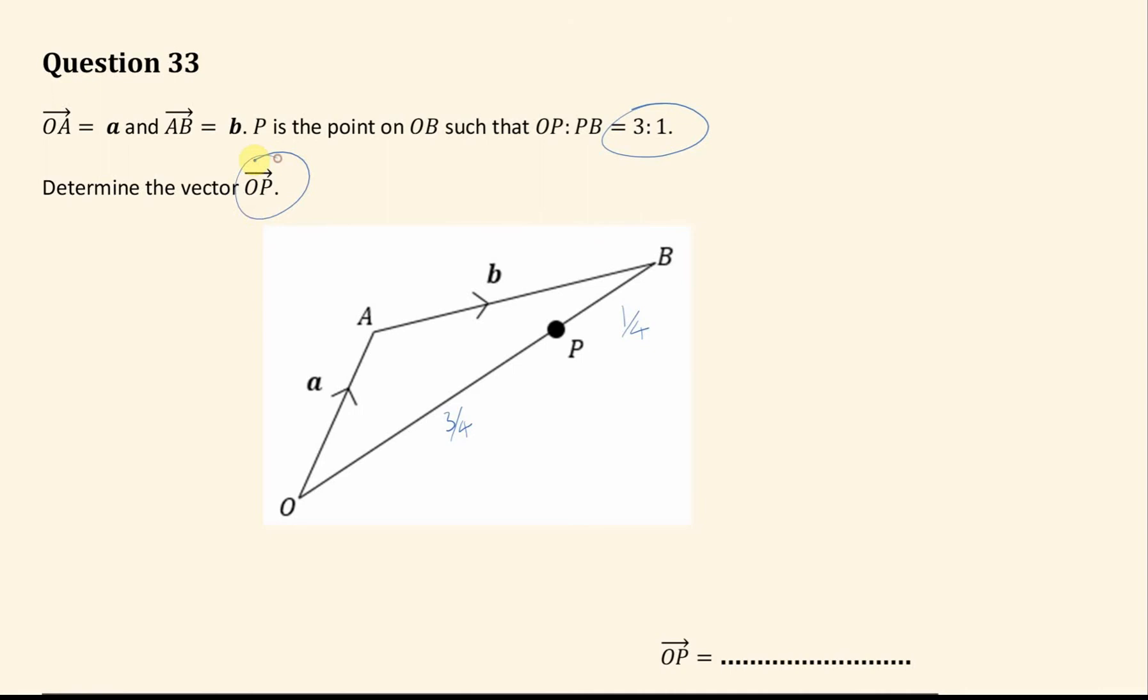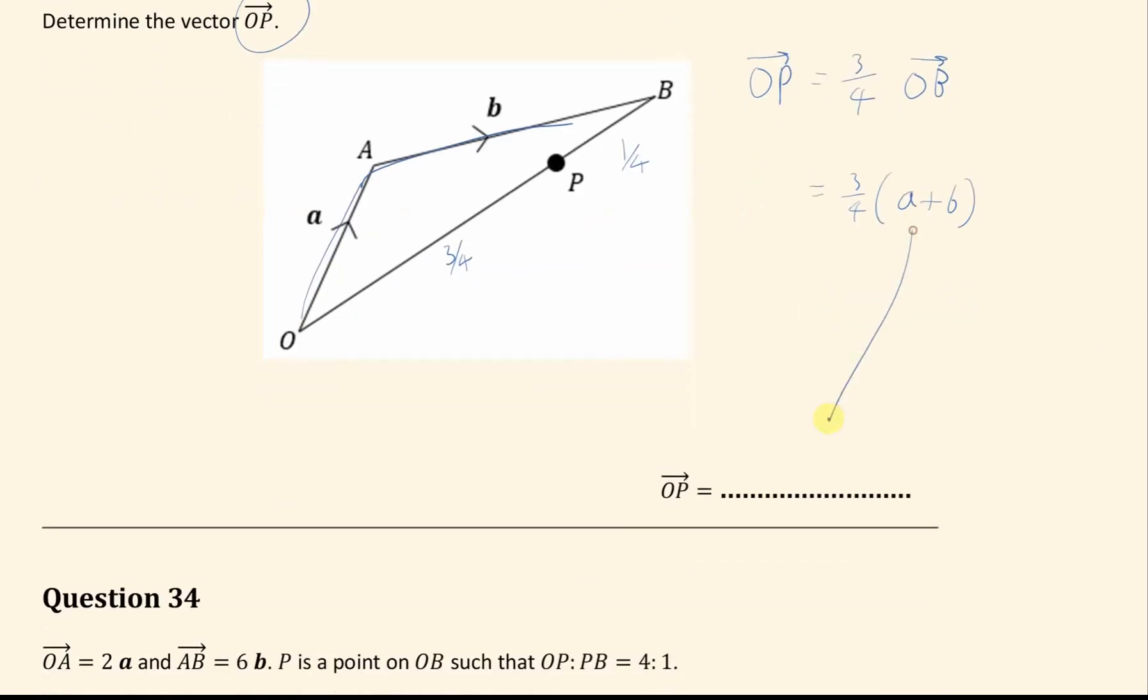So looking here, we want the vector O to P. We now know that O to P will just be 3 quarters of O to B. O to B we can see is going to be this length here. So it's going to be 3 quarters of a plus b. You can either write this straight down or you can expand it out as 3 quarters a plus 3 quarters b. Again, both are acceptable.